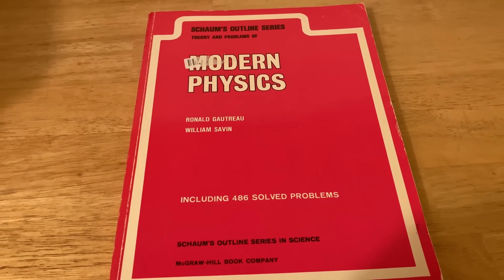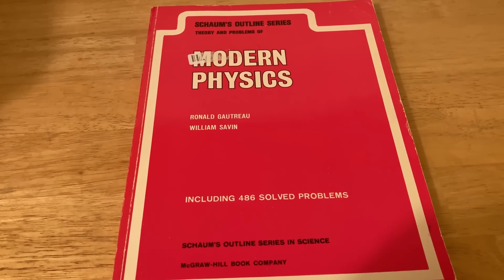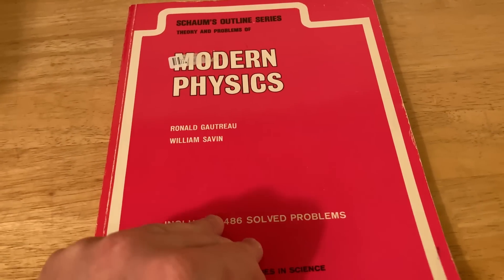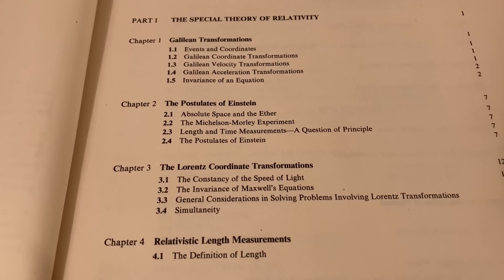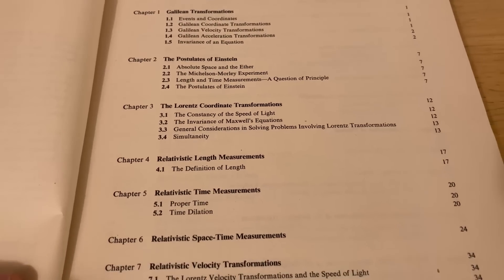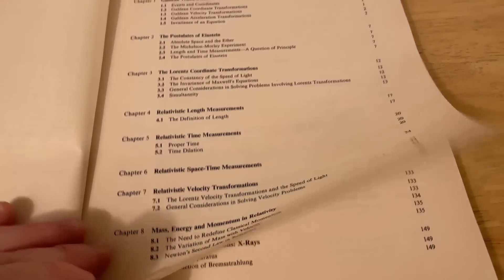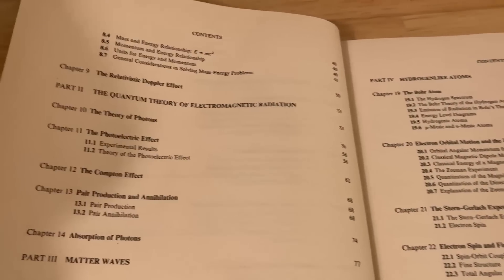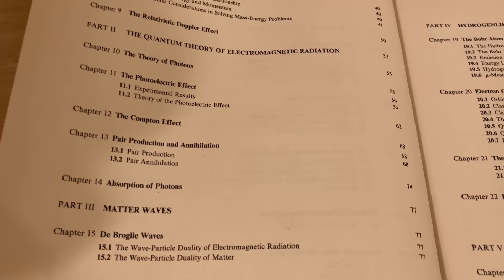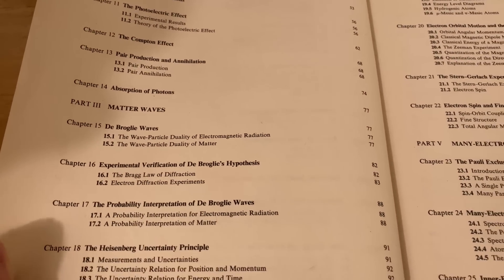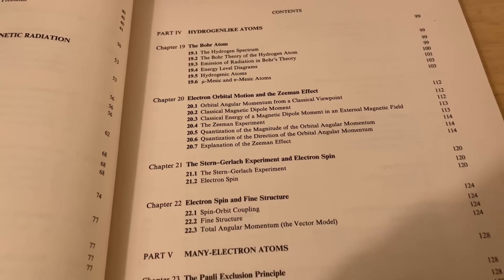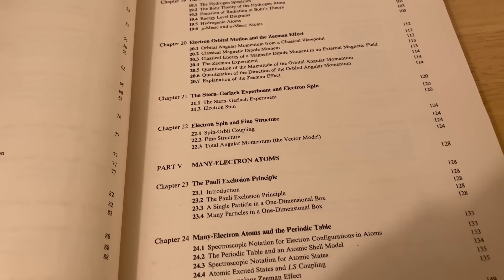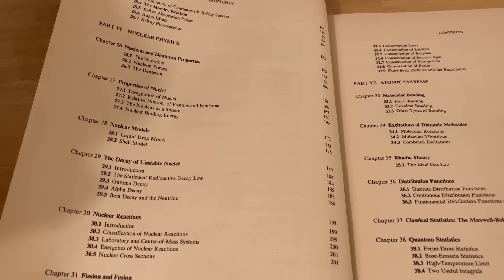This is the Schaum's on modern physics. I bought this when I was taking modern physics, which was basically physics three for me in college. For me, this was the best physics class — the one I got the highest grade in and thought was the most interesting. Physics one and two were really fun and I got B's in both, but physics three — modern physics — was the one I got an A in. I thought this book was pretty cool; it's got a lot of really good examples.